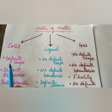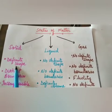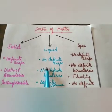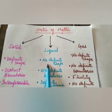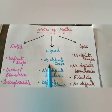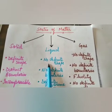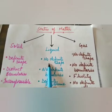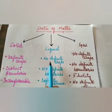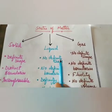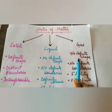In solid, it has a definite shape. Solids are rigid, so they have a definite shape. Liquid does not have a definite shape. When you pour water into a glass, it takes the shape of the glass; if you pour it in a bowl, it takes the shape of the bowl. Similarly, gas also does not have a definite shape.